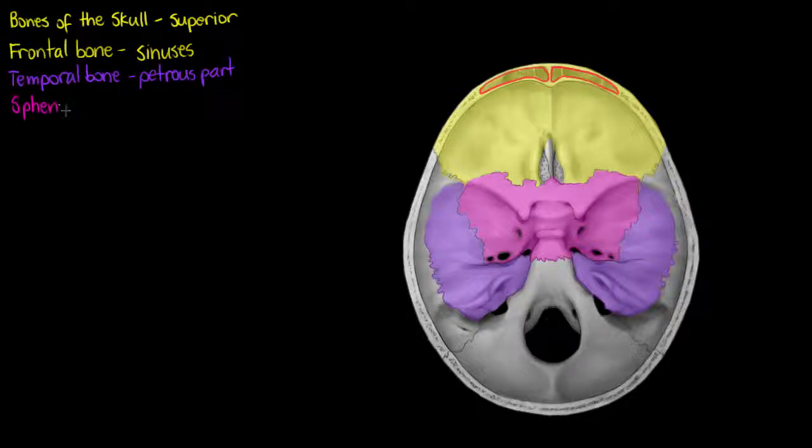Moving to our sphenoid bone now, we're going to see two segments, well actually three segments. One being part of our greater wing, which I'll just outline here. The greater wing being this portion more posterior. And also our lesser wing.